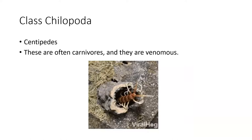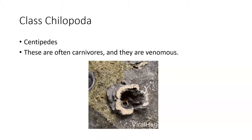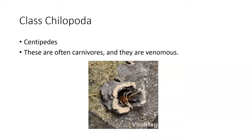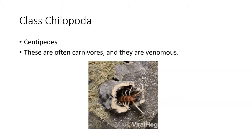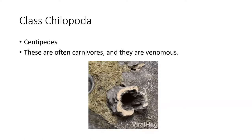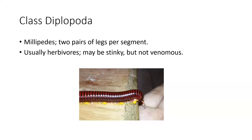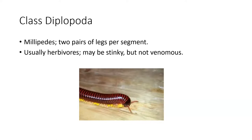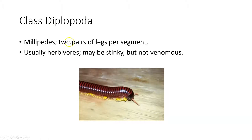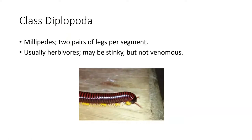Centipedes are Chilopoda — carnivorous, can bite people, and are venomous, though usually not fatal. Millipedes are herbivores, not venomous, but secrete a stinky chemical to deter predators. They have two pairs of legs per segment — that's where 'diplo' comes from. Some people keep large millipedes as pets.